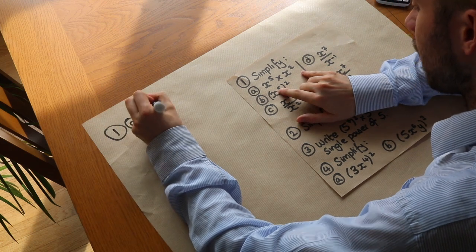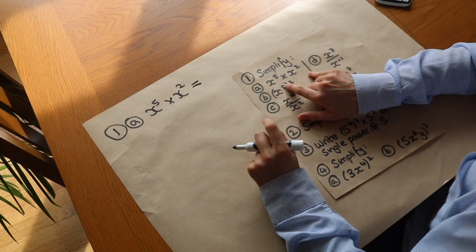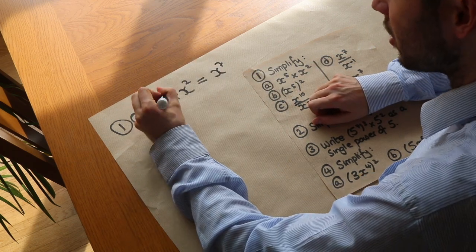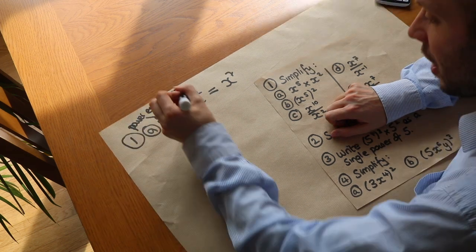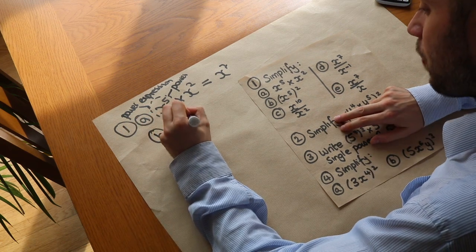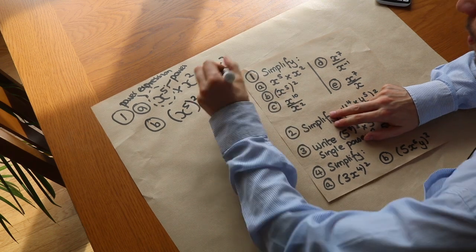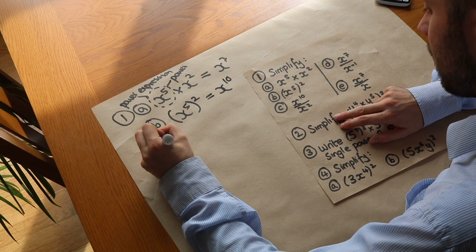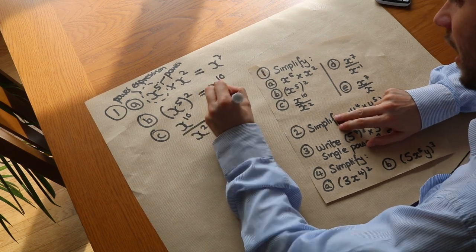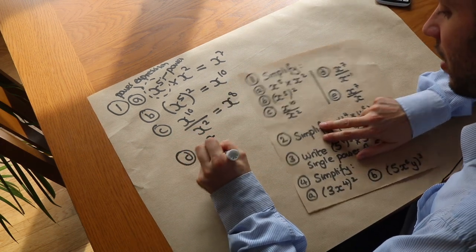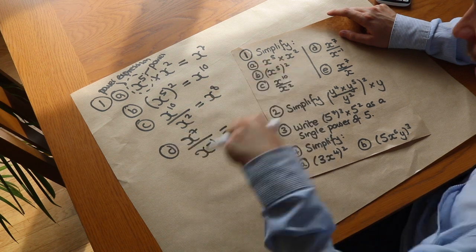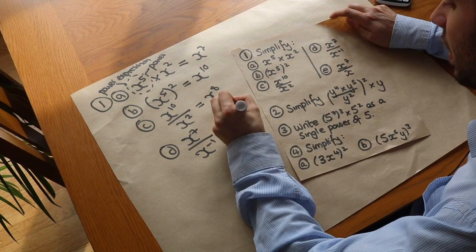First, simplify x to the five times x squared. By our first law, we're multiplying two power expressions so we add the powers. For b, we've got a power expression to another power, so we multiply the powers together to get x to the power of ten. For c, x to the ten divided by x to the two: we subtract the powers, giving x to the eight. For d, x to the seven divided by x to the minus one: subtracting the powers, seven minus negative one is seven plus one — remember subtracting a negative means adding — so that's x to the power of eight.